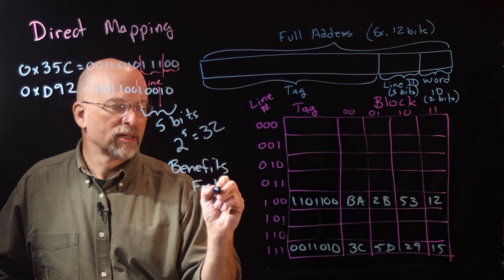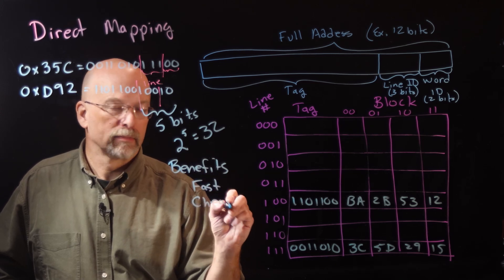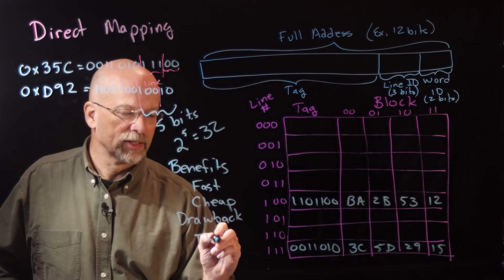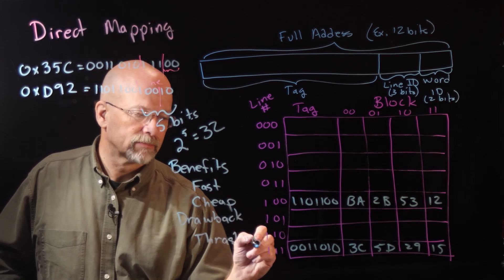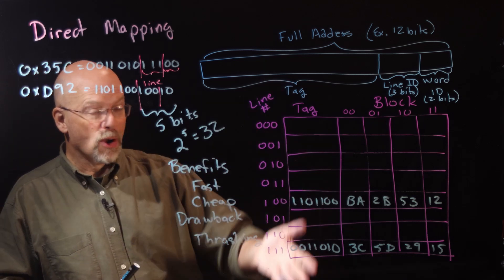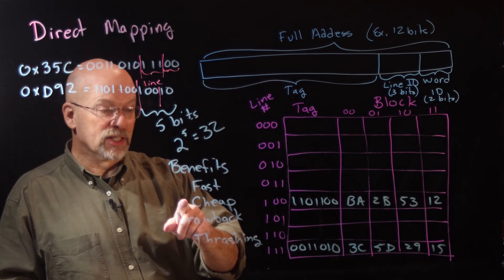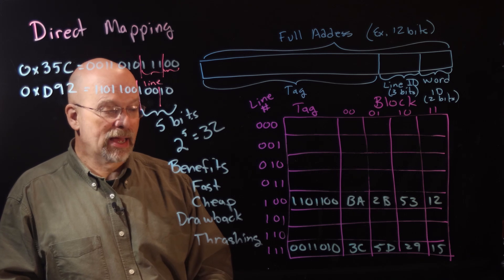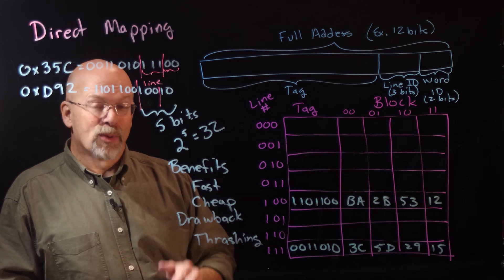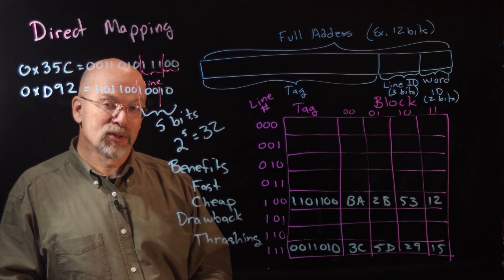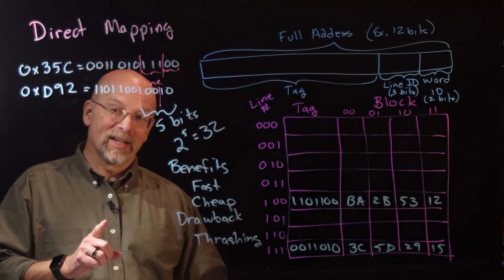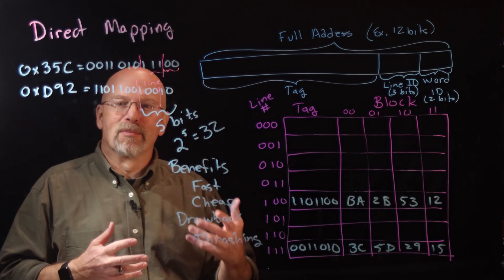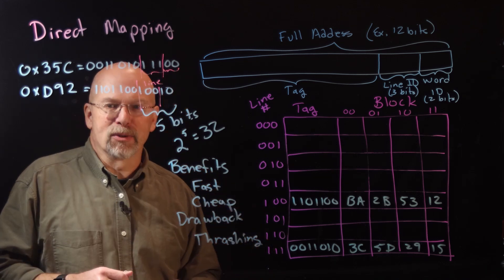So the benefits of direct mapping: it's fast and cheap. No replacement algorithm needed, quick and easy search. The drawback: there's a really good chance of thrashing. The next mapping we'll talk about is set associative, which takes the benefits of fully associative and the benefits of direct mapping and tries to combine them in a balanced manner.